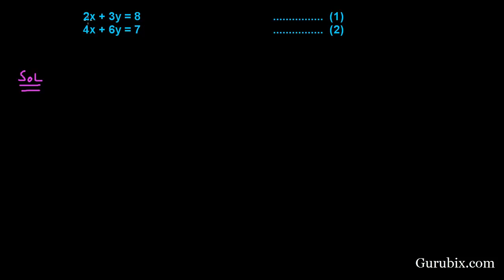Here we observe that if we multiply equation number one by two, then the coefficient of x will be equal in both the equations. So we shall multiply equation number one by two and equation number two by one.